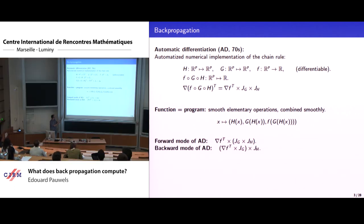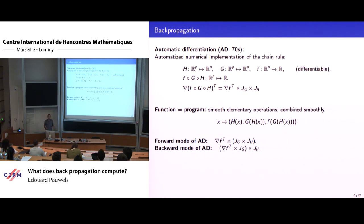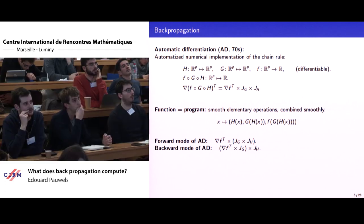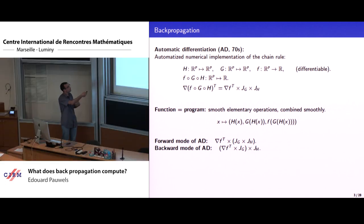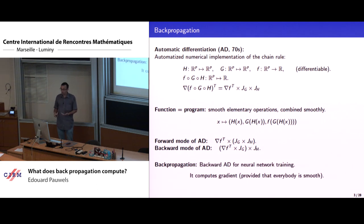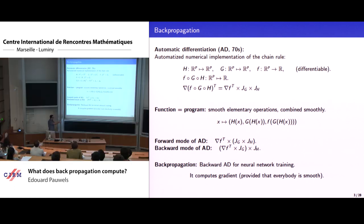With this abstraction you can use knowledge of derivatives of elementary operations to additionally compute derivatives. There are essentially two ways to do it: the forward mode, which is what you would do with pen and paper, and the backward mode, which is more advanced and more computationally efficient. Both compute the same thing at the end — a gradient. Backpropagation is essentially the backward mode of automatic differentiation for training neural nets.